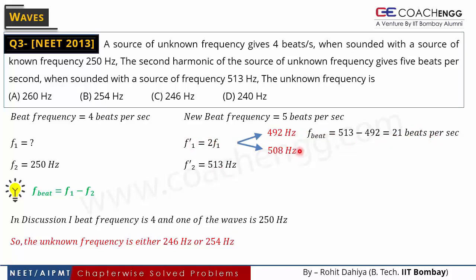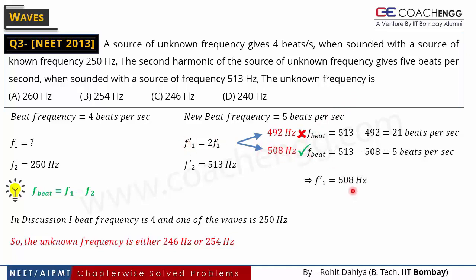If we take f1′ = 508 Hz, then beat frequency = 513 − 508 = 5 beats per second, which matches the value given in the question. So f1′ = 508 Hz is correct, and 492 Hz is wrong. Therefore f1 = 508/2 = 254 Hz. The unknown frequency was 254 Hz — option B was the correct answer.